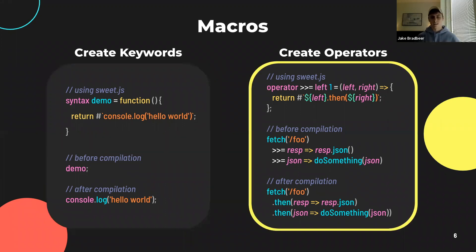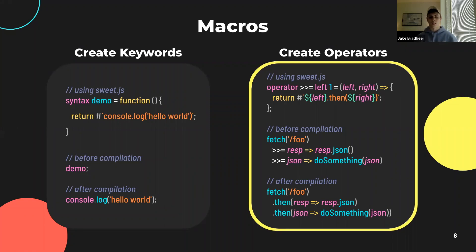On the right-hand side, we are creating a new operator 'angle angle equal', which is created using the operator keyword followed by the syntax we are looking to construct. Here we're trying to replace the existing dot-then syntax, and you can see that it's used pretty similarly to dot-then. At compilation, any occurrence of 'angle angle equal' is just going to be replaced with dot-then.